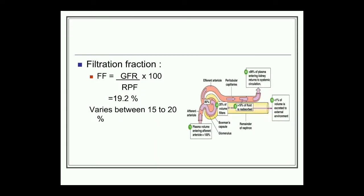Another terminology we will discuss is filtration fraction. It is the fraction of plasma which is filtered as glomerular filtrate. Filtration fraction equals GFR divided by renal plasma flow, multiplied by 100. Renal plasma flow is about 600 ml, from which 125 ml is filtered. The normal value for filtration fraction is between 15 to 20 percent. If we calculate using GFR of 125 ml and renal plasma flow of 625 ml, we get 19.2 percent.